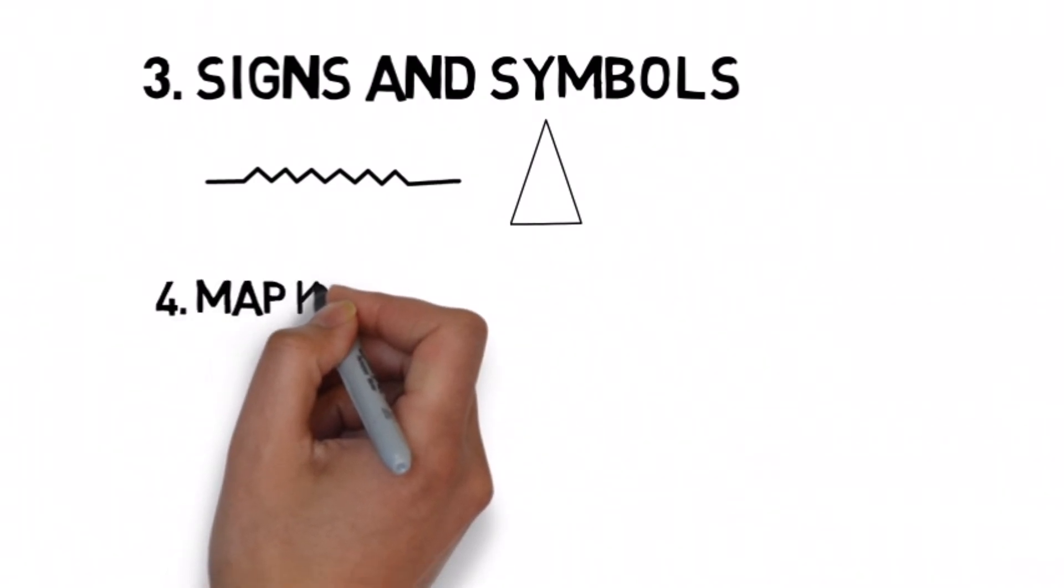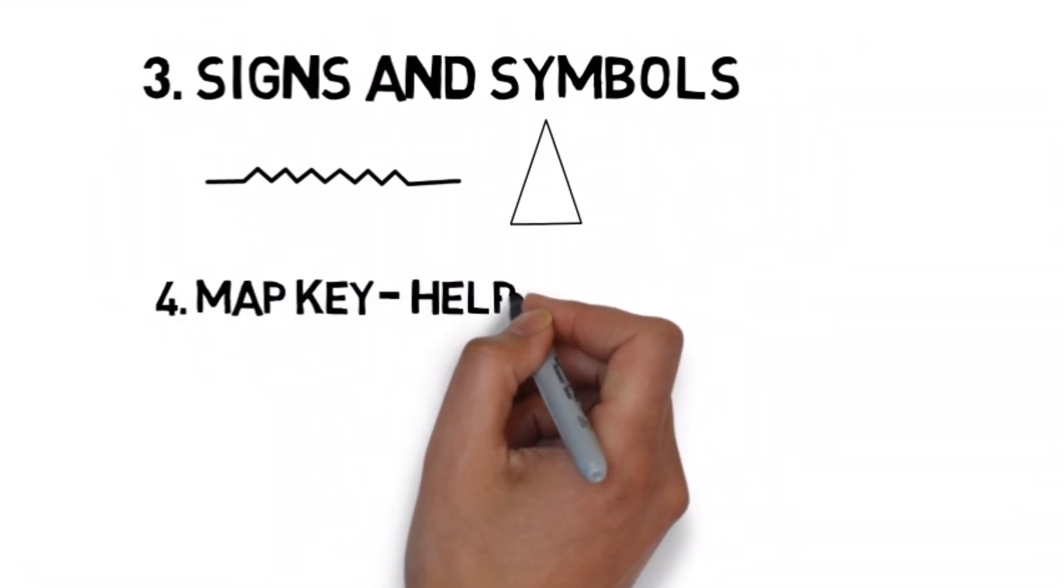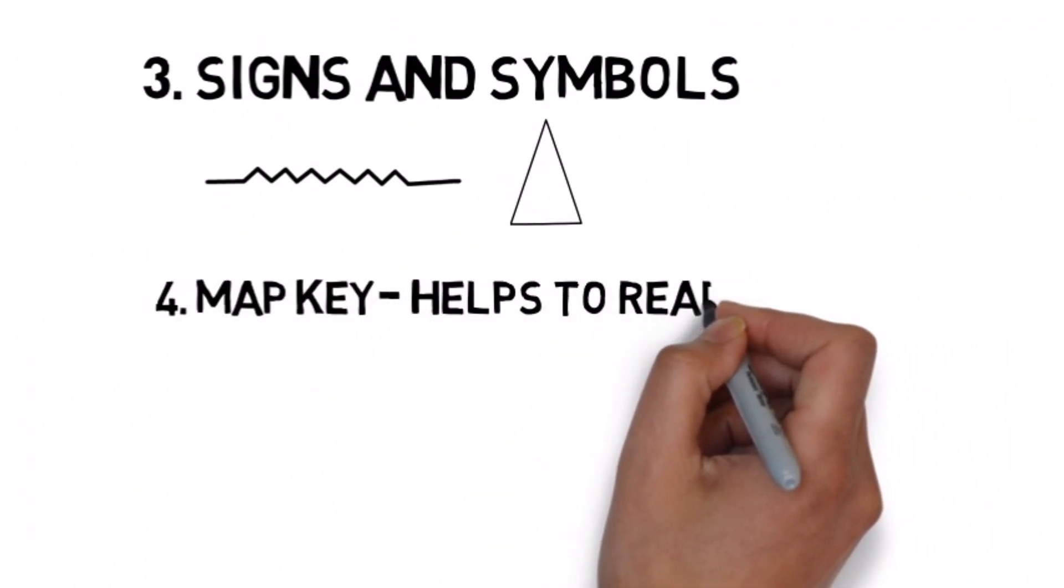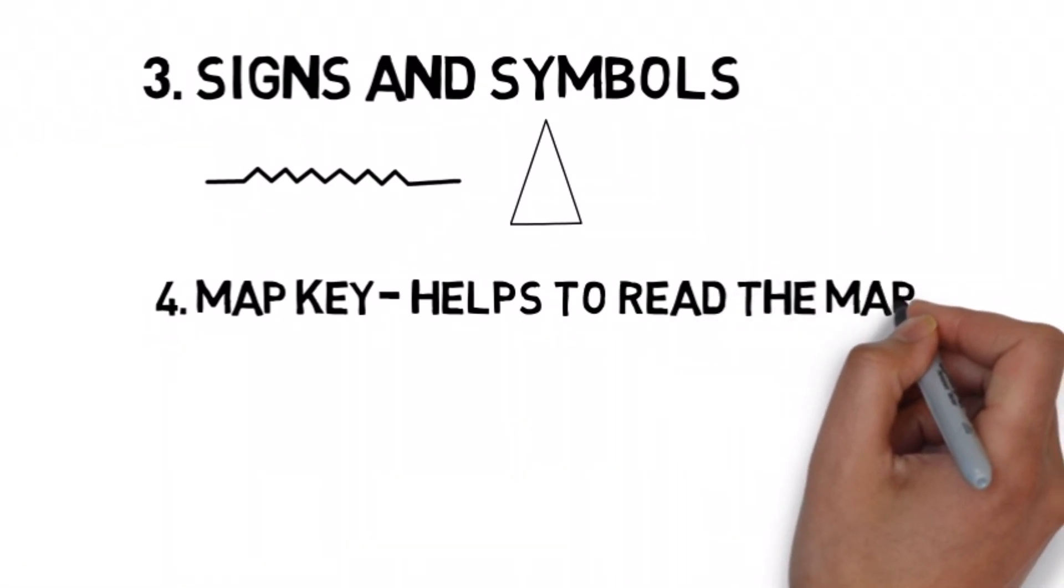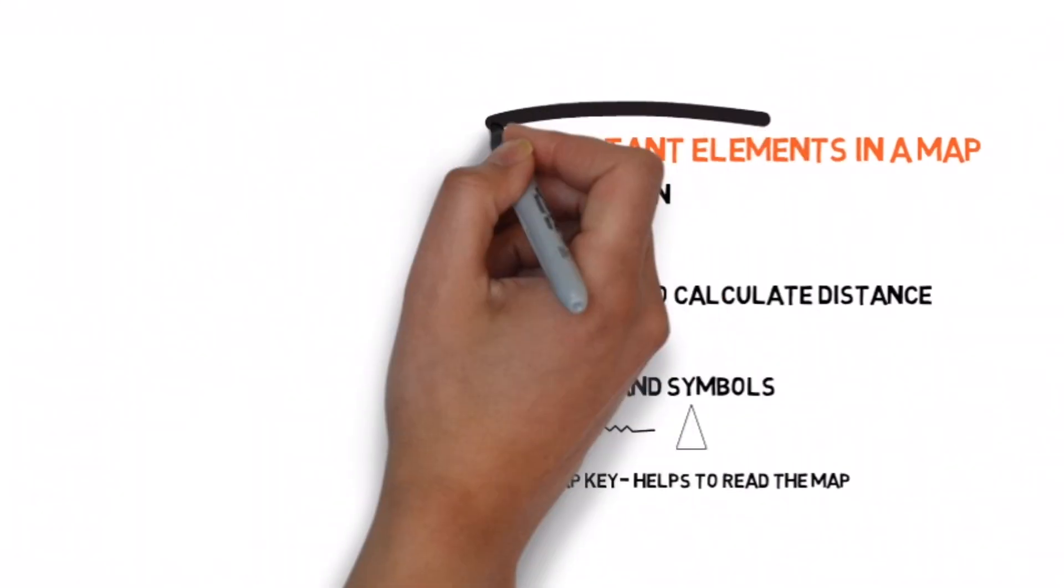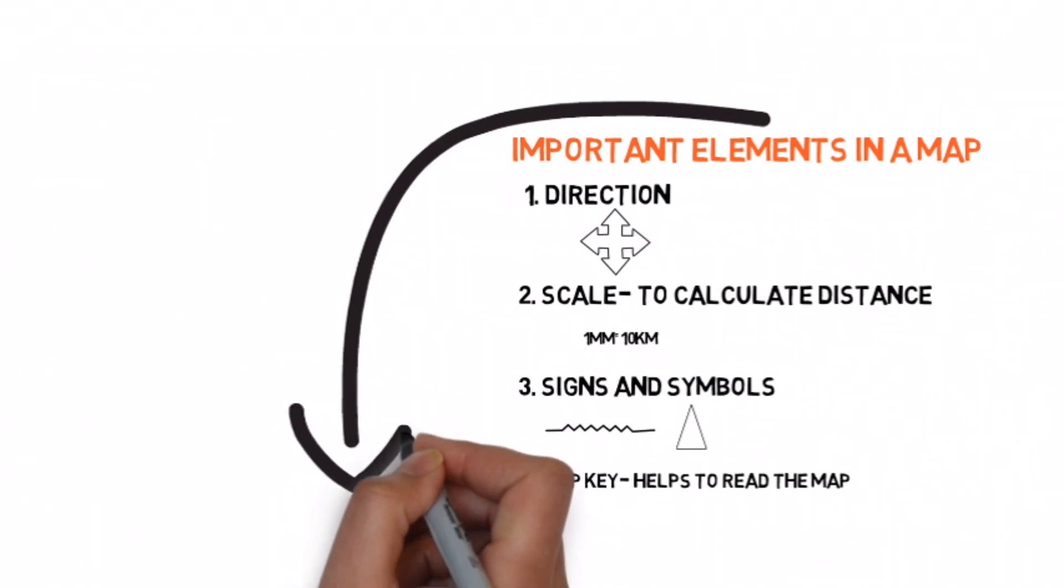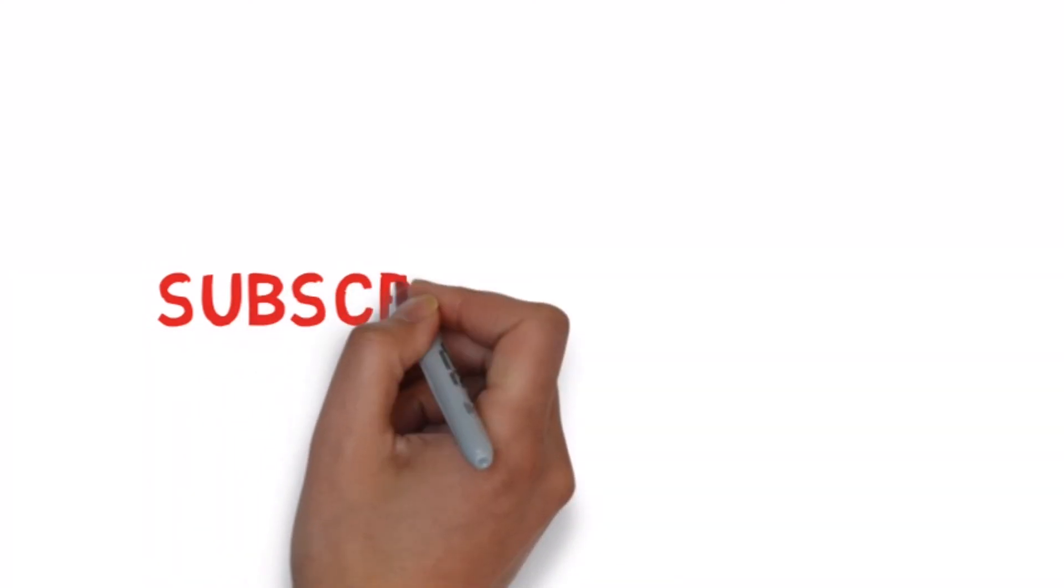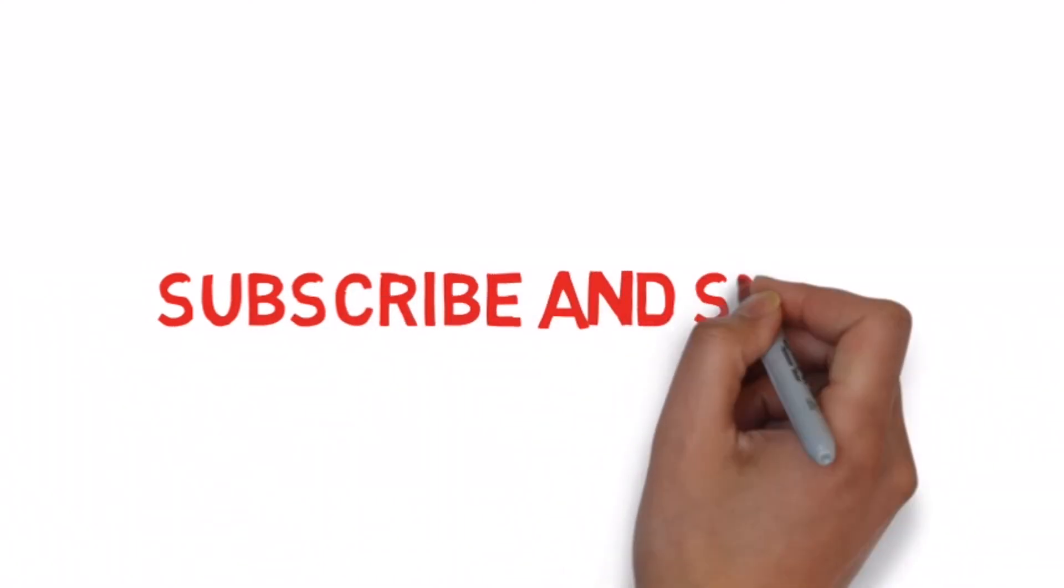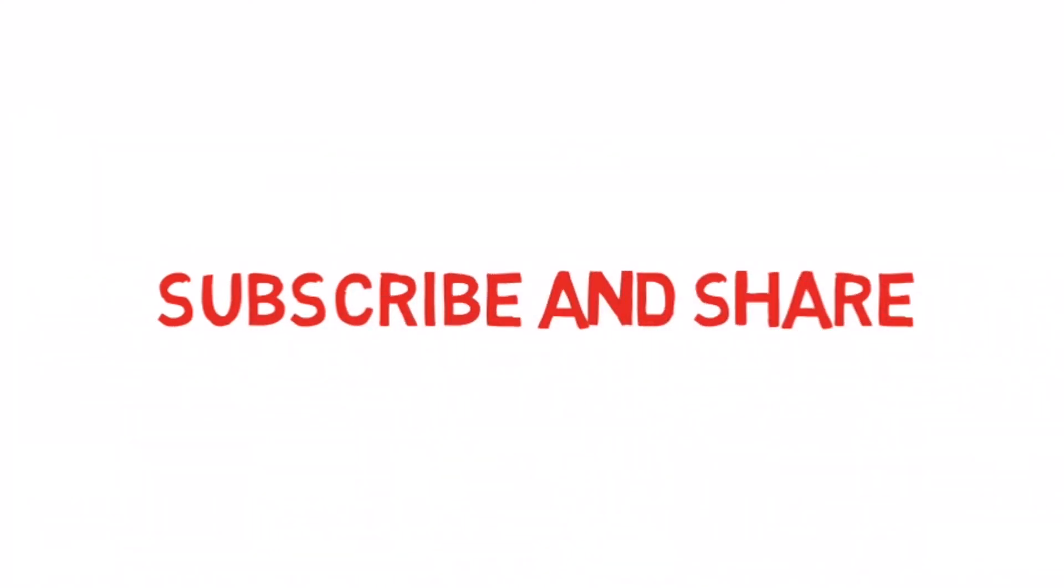Which is another important part of a map. It helps us in reading the map. So the map key or legend is another important part of a map and it helps us to decode the colors, signs, and symbols that have been used in the map. If you like this video, subscribe to the channel and share it with your friends.